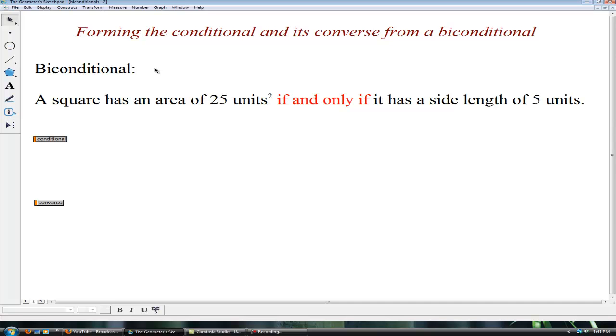You will see some problems in the text maybe on a quiz or a test that from a given biconditional you'll be asked to create a conditional and its converse. So forming the conditional and its converse from a biconditional, let's read our biconditional. A square has an area of 25 square units if and only if it has a side length of 5 units.